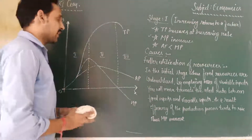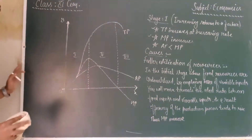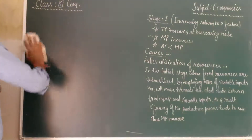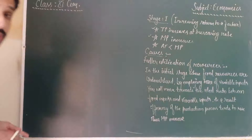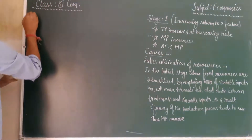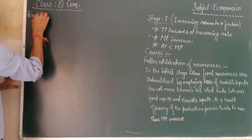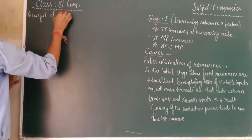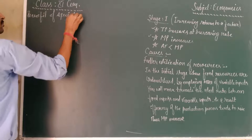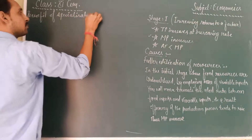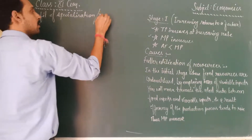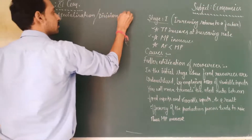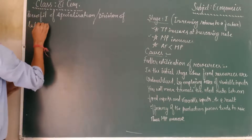Let us put this diagram aside since we have already covered it. The second reason is Benefit of Specialization, or Division of Labor. This is another cause of Increasing Returns to a Factor.